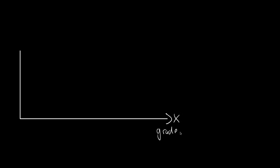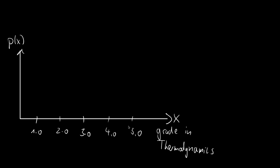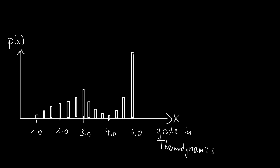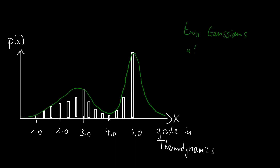You are looking at the distribution of grades in an exam — not just any exam, but the most difficult exam of the bachelor education: thermodynamics. When you plot bar charts to get a sense of the distribution and try to fit a function, you see there are two Gaussians at the same time. Welcome to Gaussian Mixture Models.